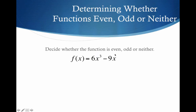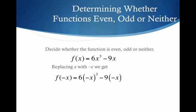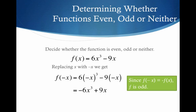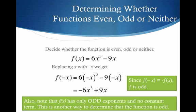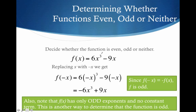Decide whether this function is even, odd, or neither. Let's replace x with negative x. What happens to a negative when we cube it? That negative pops out in front. And you can see with the negative 9 and negative x, it's making it positive. This is just a negative version of our original function — everything is the opposite sign. So this means our function is odd. Is there a trick? Yes — notice the exponents are odd. 3 is an odd number, and the one that we don't see is also odd. Only odd exponents means odd function.